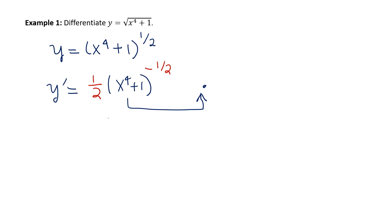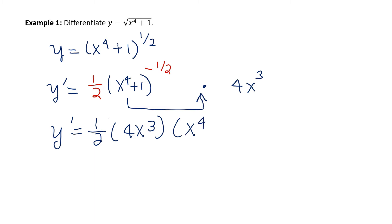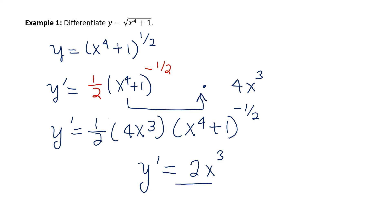y prime: bring the outside power of 1 half down, subtract 1 from the power to get negative 1 half. The inside function x to the fourth plus 1 stays the same, then multiply by the derivative of the inside. The derivative of x to the fourth is 4x cubed, and the derivative of 1 is 0. Regrouping: y prime equals 1 half times 4x cubed times the quantity x to the fourth plus 1 raised to the negative 1 half, which simplifies to 2x cubed over the square root of x to the fourth plus 1.